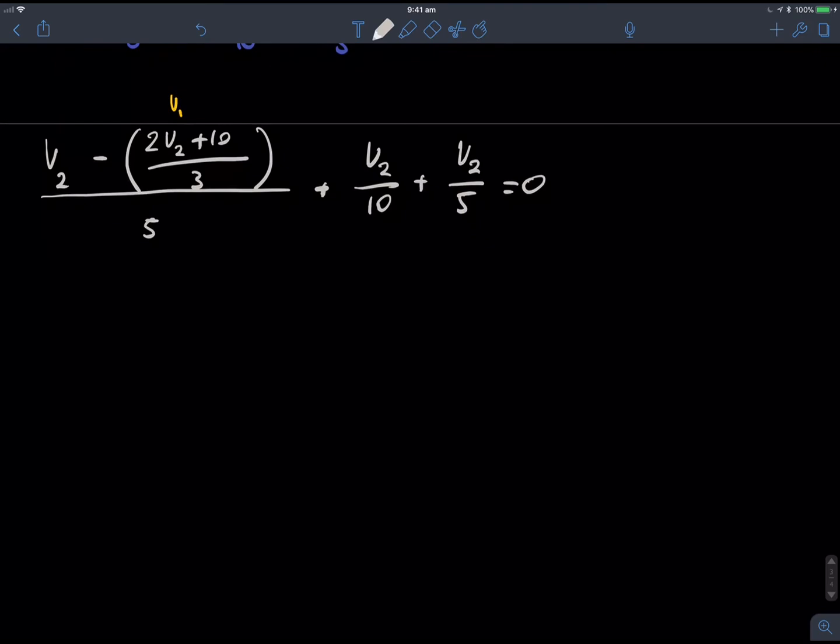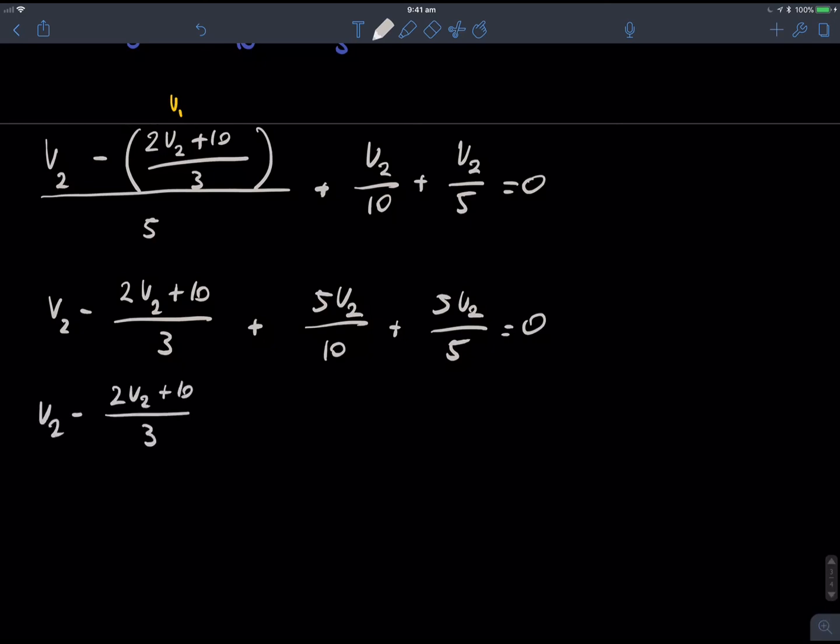I'm just going to times everything by 5 here, just to get rid of that denominator on the bottom there. So, it'll get V2 minus 2V2 plus 10 on 3, plus 5V2 on 10, plus 5V2 on 5. Simplifying this, we're just going to get this.